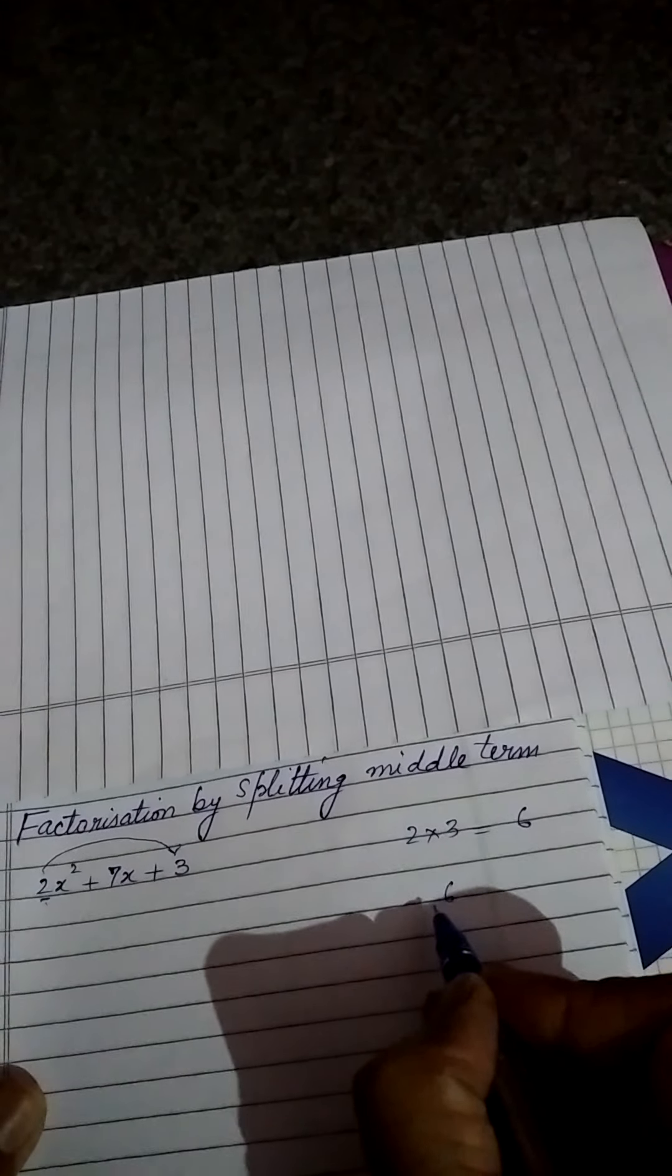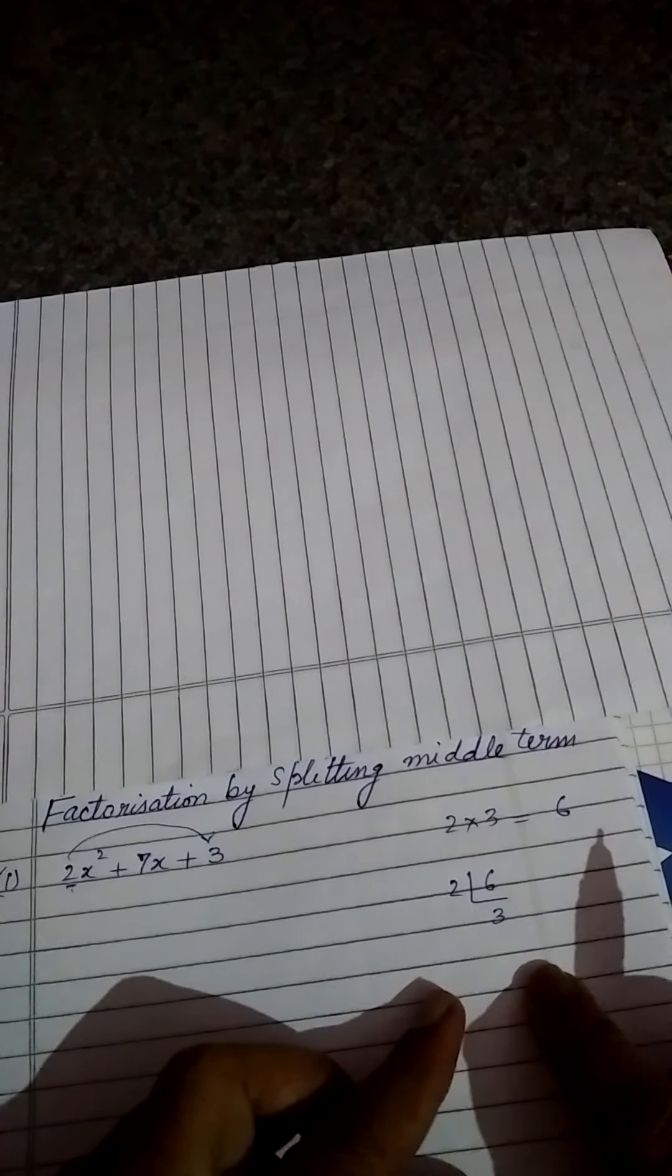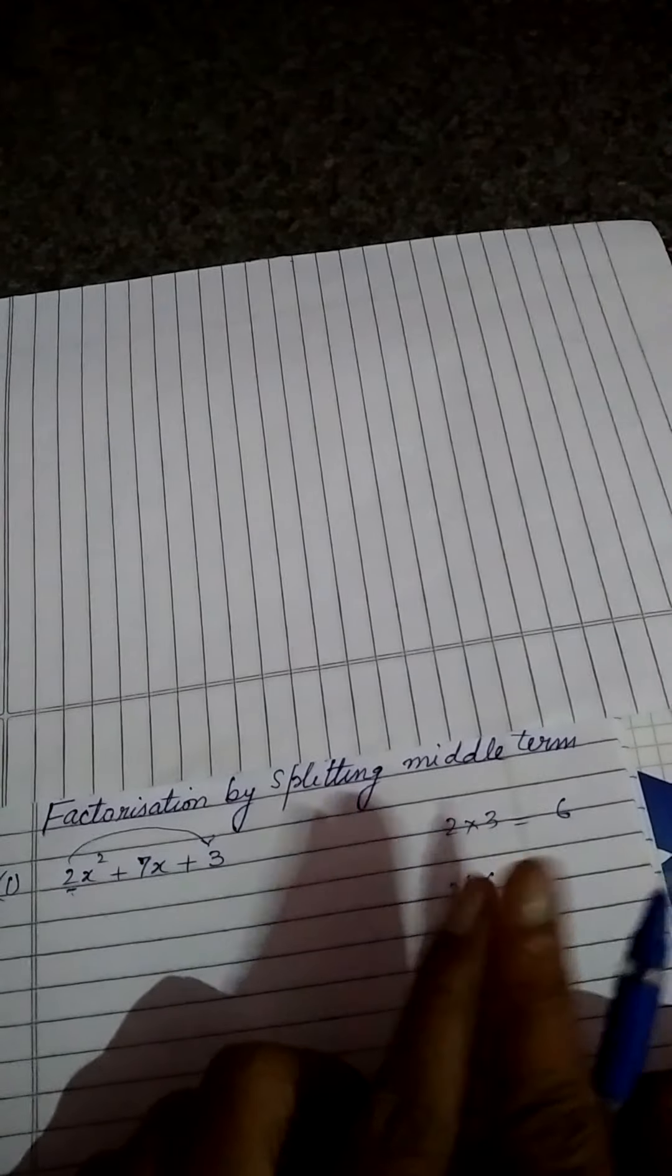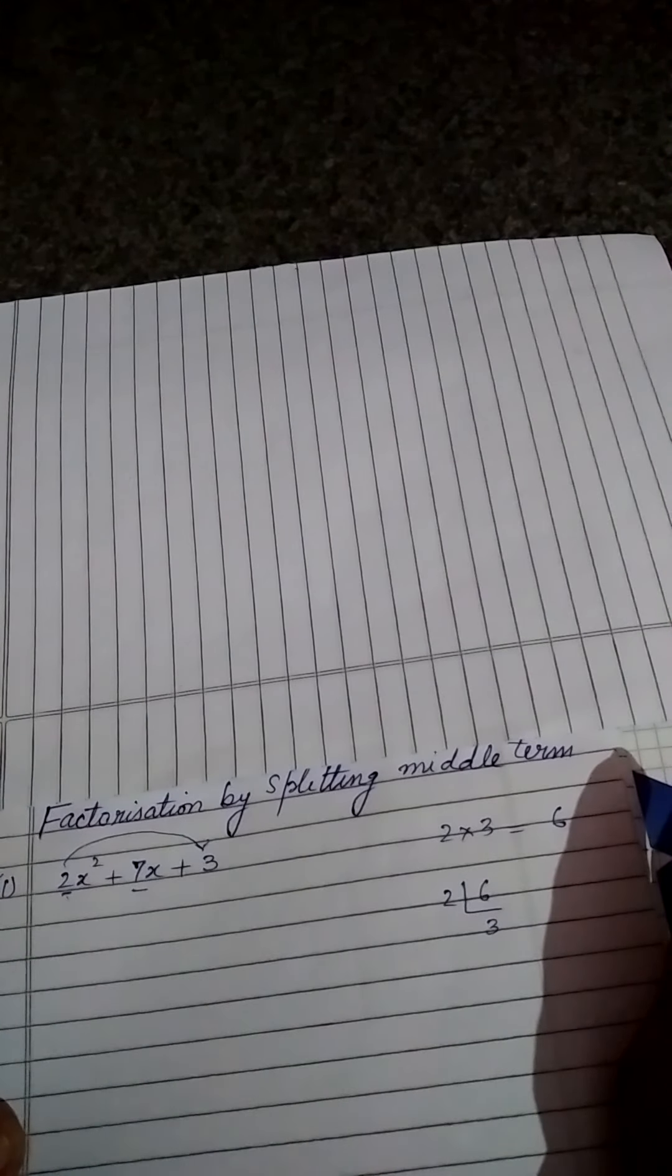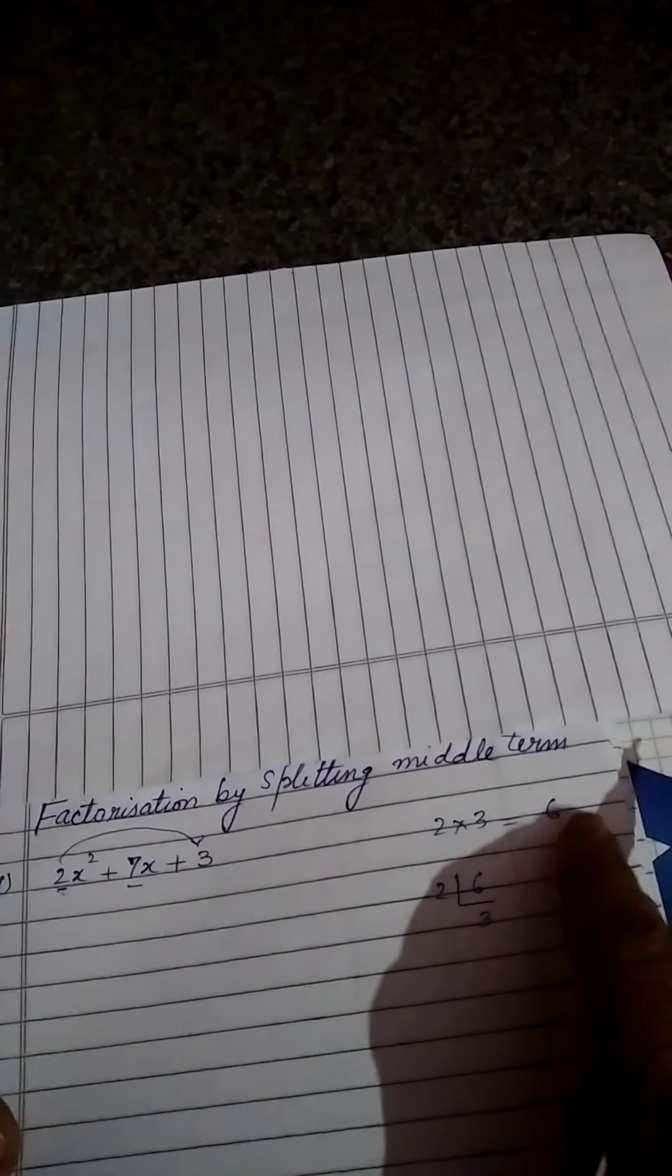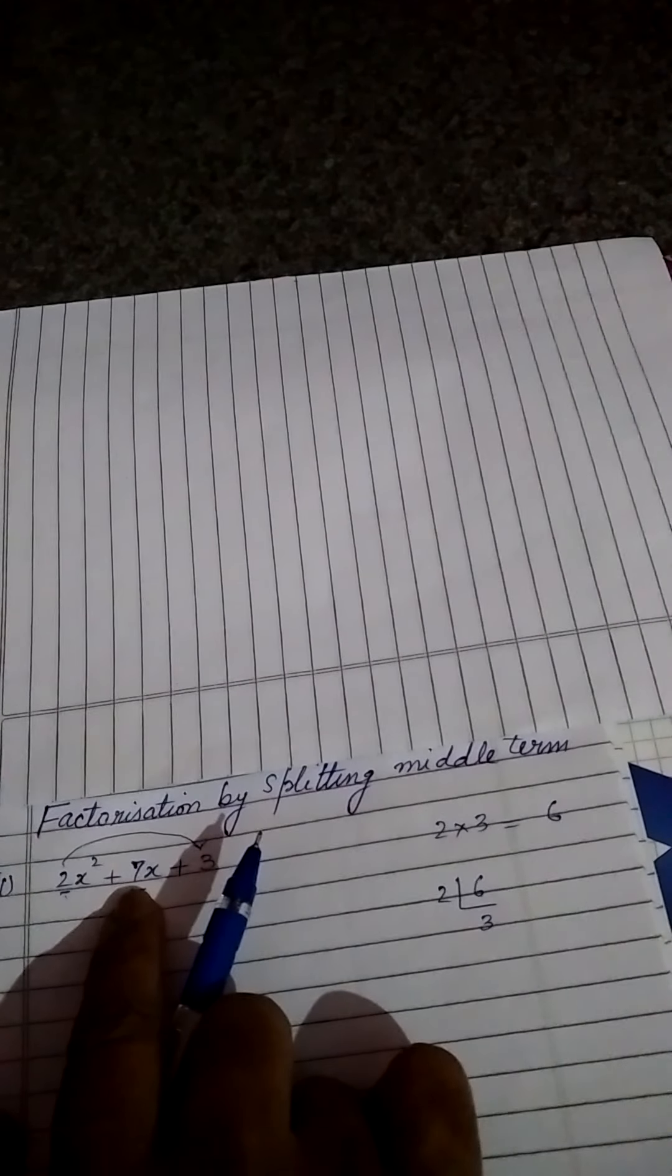2, 3 is 6. We will factorize this product in such a manner so that when you add the factors, you should get 7. And when you multiply those two factors, you get this product 6. Both conditions should be satisfied. After addition, this should come. And after multiplication, that should come. We have to factorize this number in two parts or in two factors so that after addition, 7 should come. After multiplication, 6 should come.